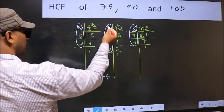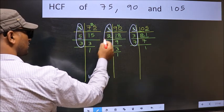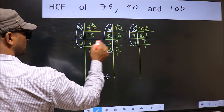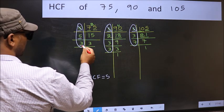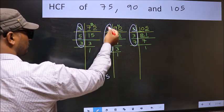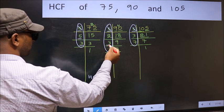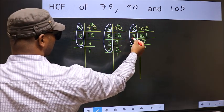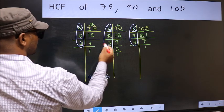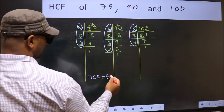Next number 5. Do we have 5 here? No. So no need to check in the other place. Next number 3. Do we have 3 here? Yes. So go to the other place. Do we have 3 here? Yes. So cut 3 and write here.